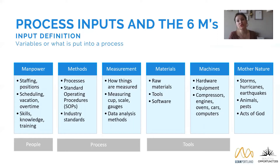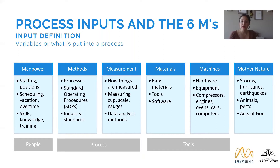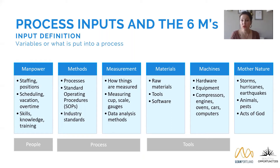Machines is where we get into hardware. If you're at a software company, that might be your computers or servers — all the equipment you use to execute your work. Compressors, engines, ovens, cars, computers — all of these are examples of machines that, whether or not they work effectively, could cause our outputs to go up or down.